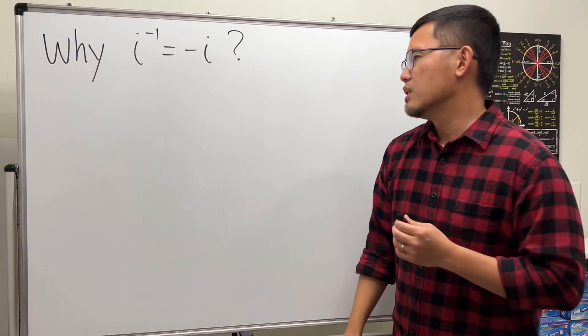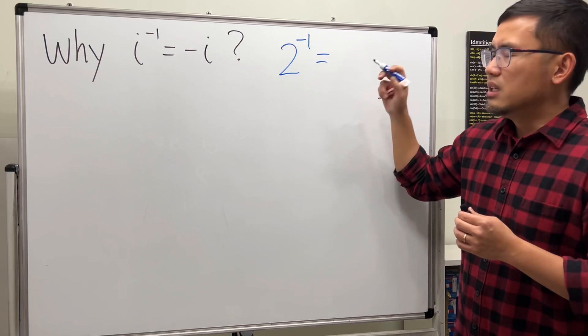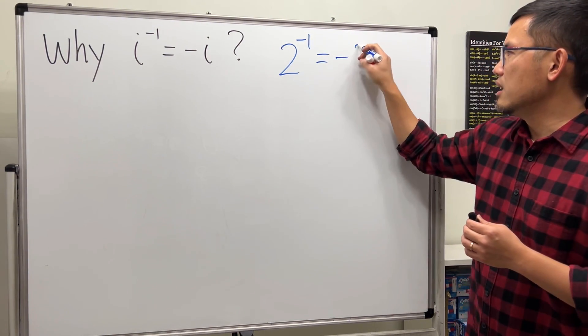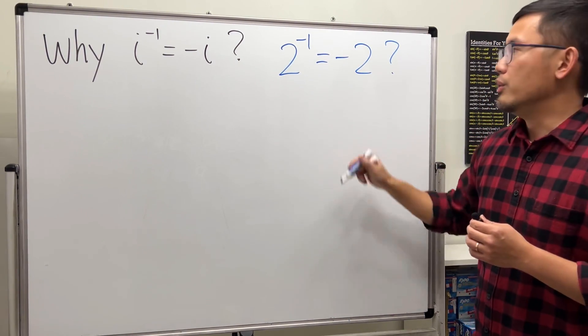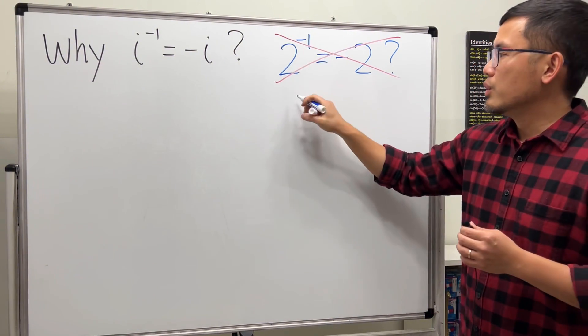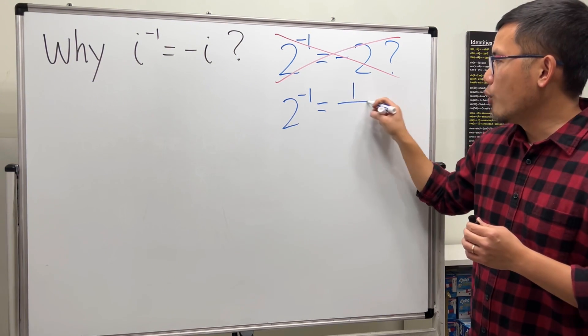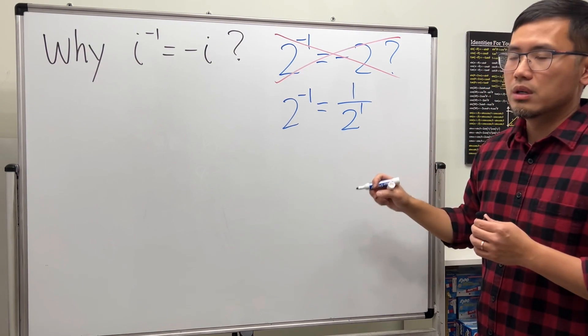For example, if you want to figure out 2 to the negative 1, is this the same as 2 times negative 1, which is negative 2? No, of course not. How do we do this legitimately? 2 to the negative 1 means you do 1 over 2 to the first power, and you work that out, you get 1 over 2.